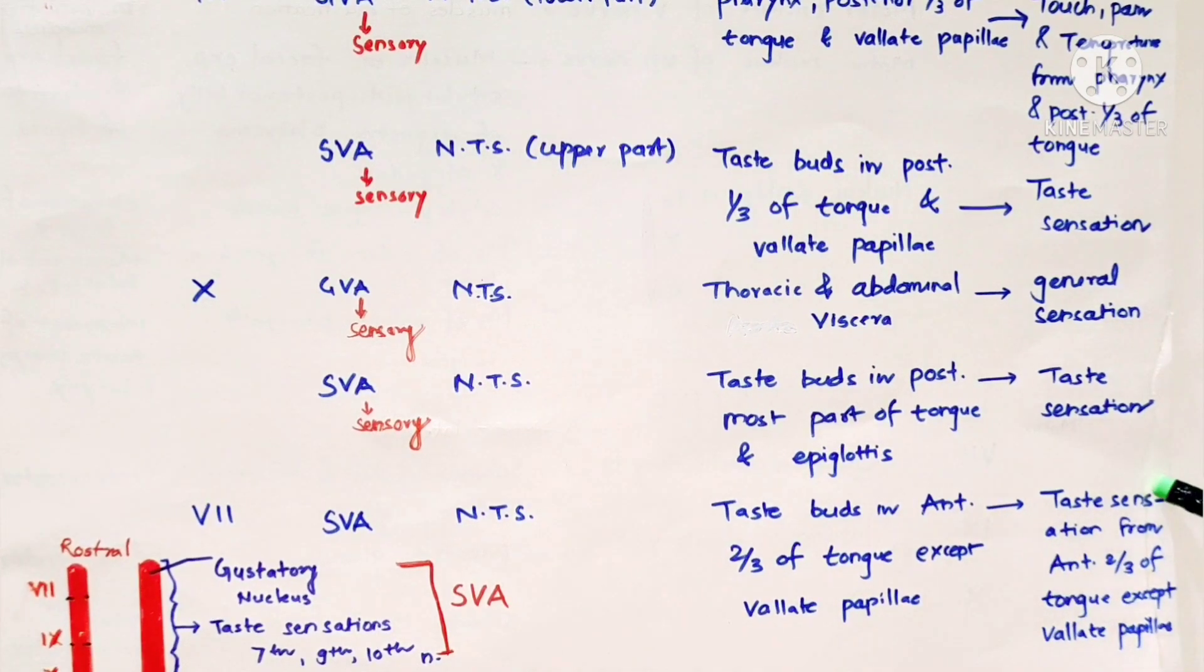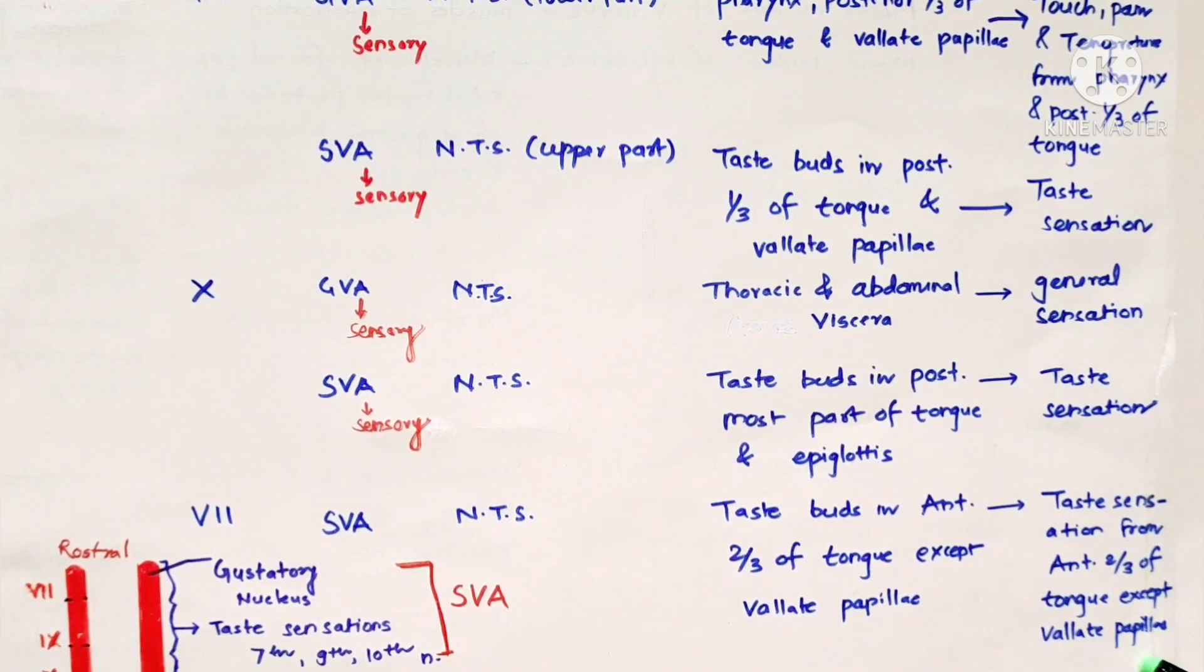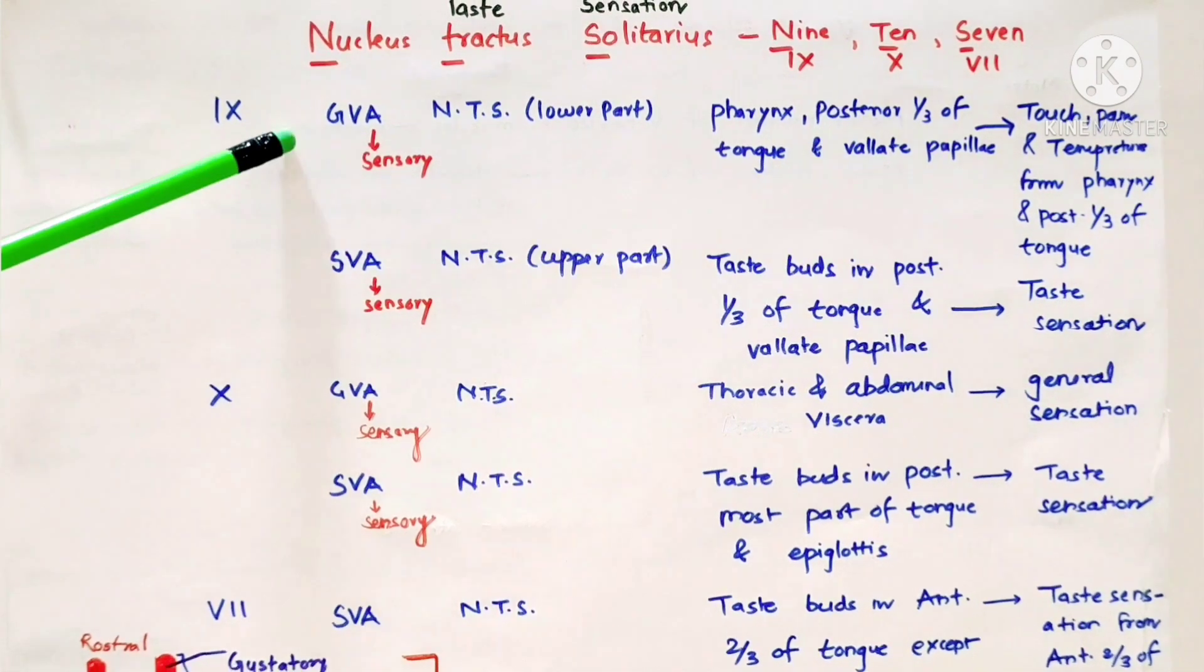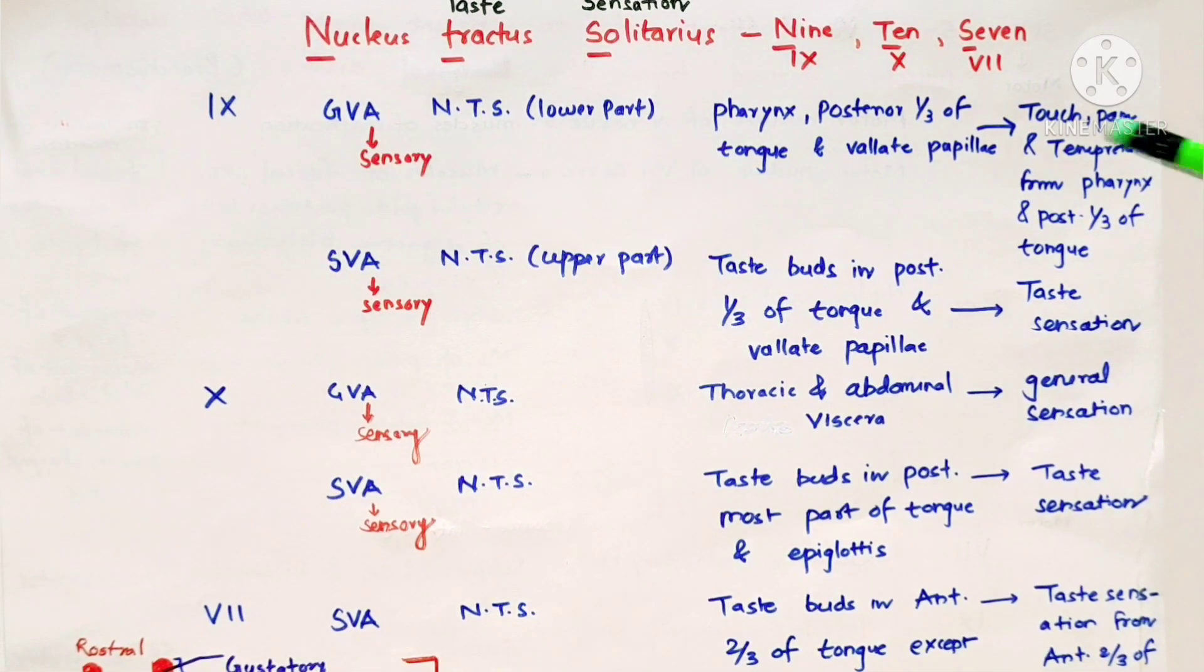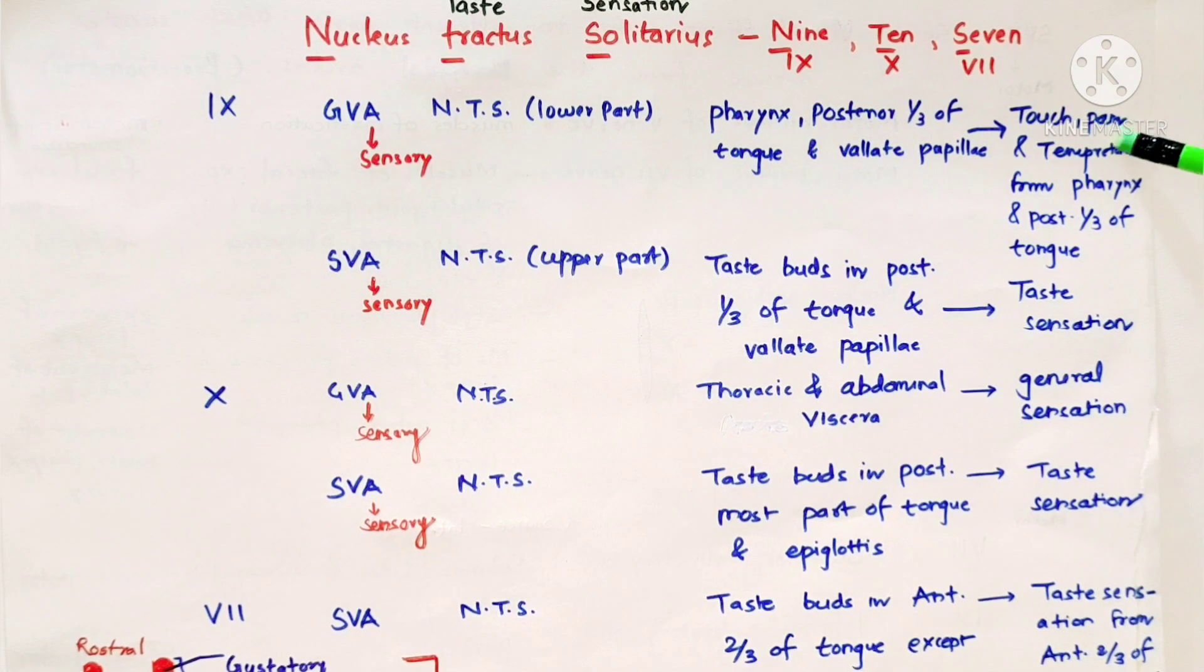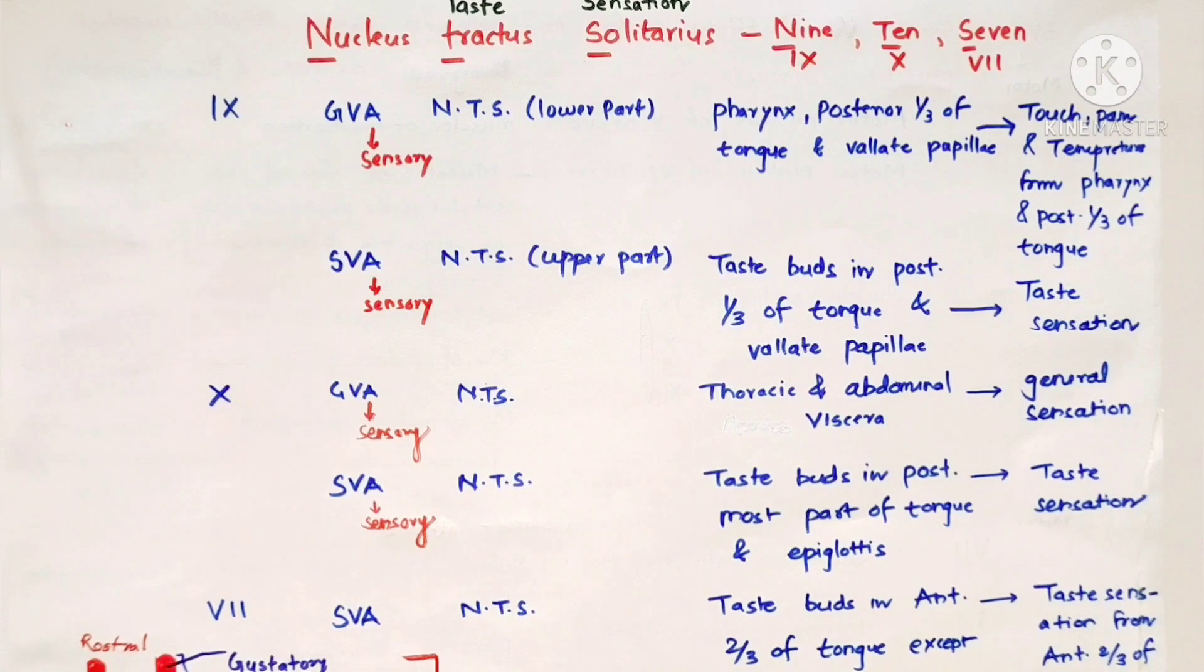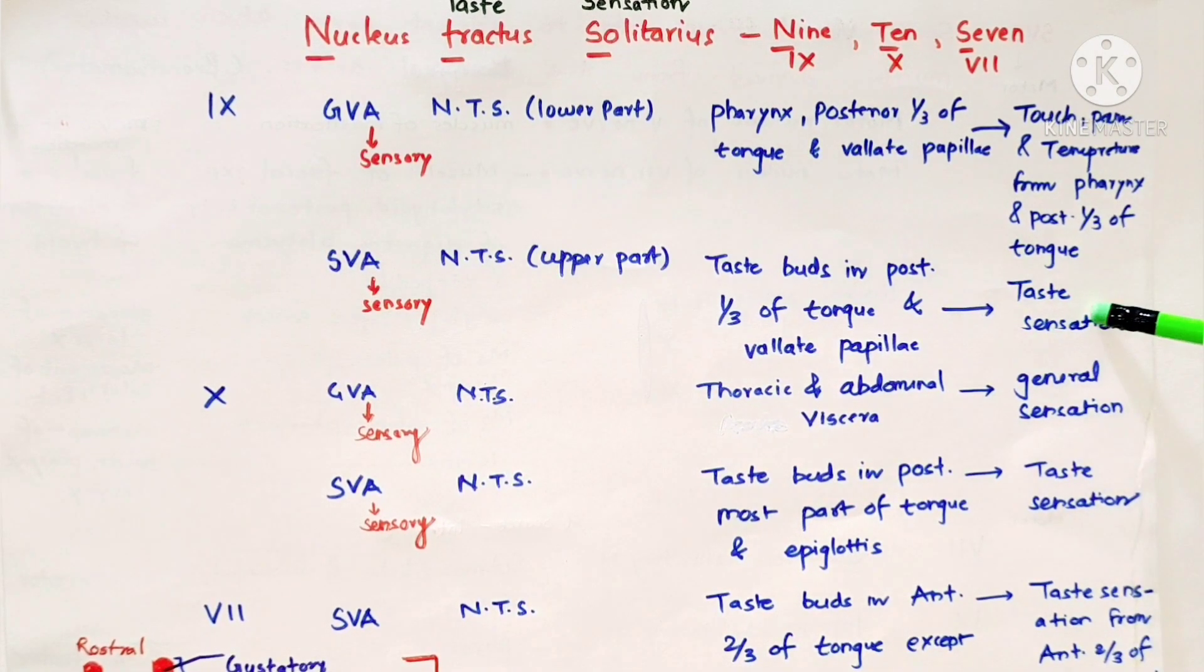Nucleus tractus solitarius receives general and special visceral afferent via seventh, ninth and tenth cranial nerves. Functional components include general visceral afferent and special visceral afferent.